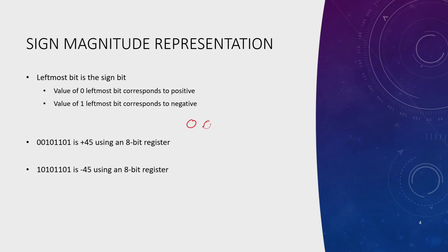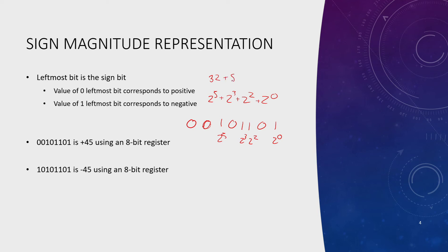For positive 45 in an 8-bit register, the binary value is 00101101. We have 1s at positions 2^5, 2^3, 2^2, and 2^0. Adding those up: 32 + 8 + 4 + 1 = 45. The leftmost bit is 0, so this is positive 45.